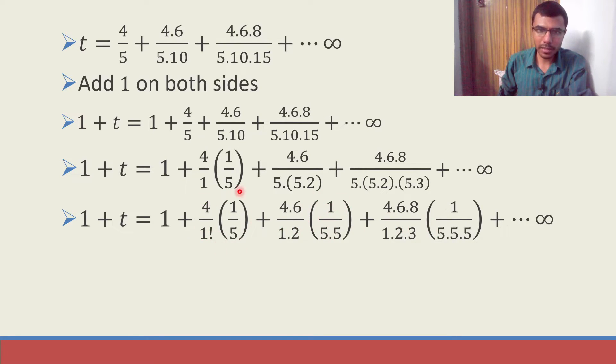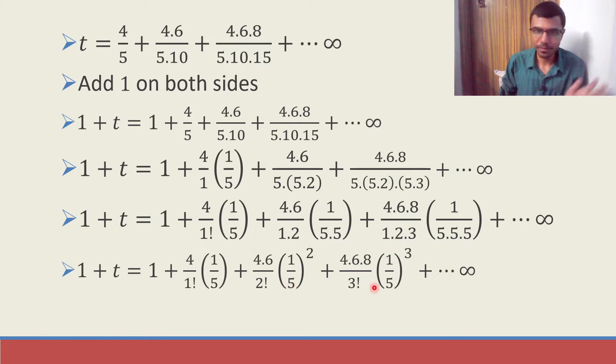Next, this I already told you. This I can write it as (1/5) squared. This I can write it as (1/5) cubed. So you see this is perfectly matching with the pattern I want. Like I have factorial in the denominators and I have increasing powers 1/5, (1/5) squared, (1/5) cubed and the terms in the product. You see there's just 4 here, 4 times 6, 4 times 6 times 8. I hope all things are good.